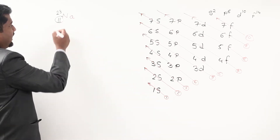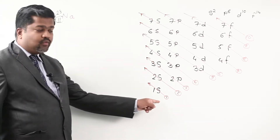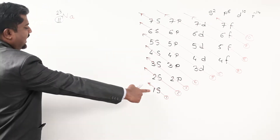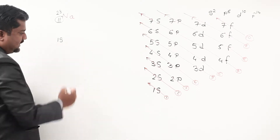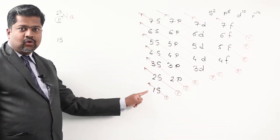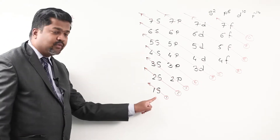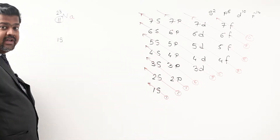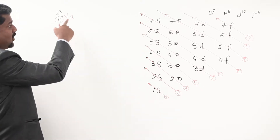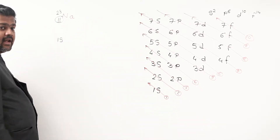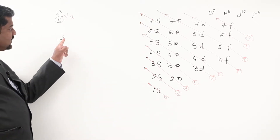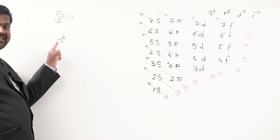I have to accommodate 11 electrons following the chart order. So first I write 1s — because my journey starts from 1s — capacity of s is 2. I have 11 electrons; out of that, 2 electrons I can accommodate here. So I write 1s2. This track is finished; now switch over to the next track. There is only one station: write 2s, accommodate 2 electrons, so it is 2s2.